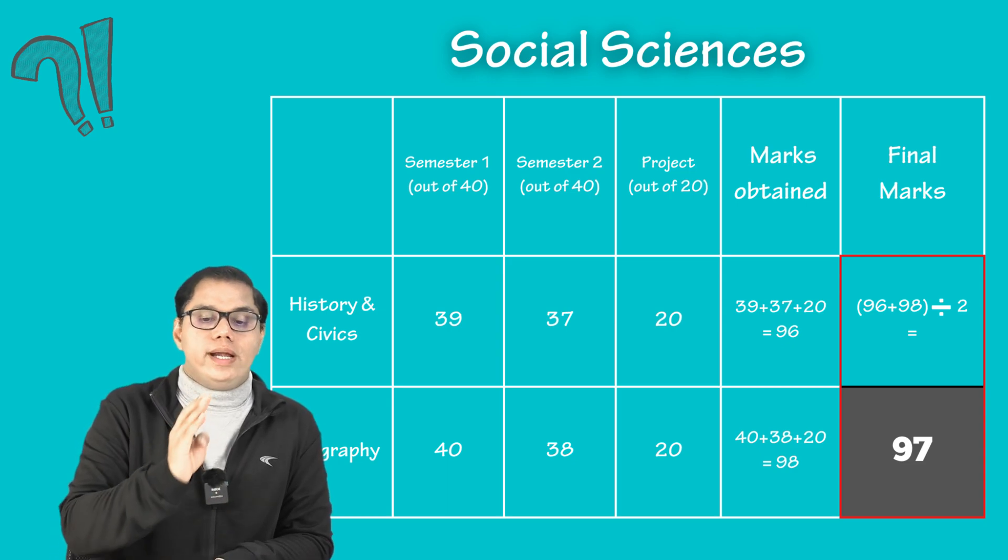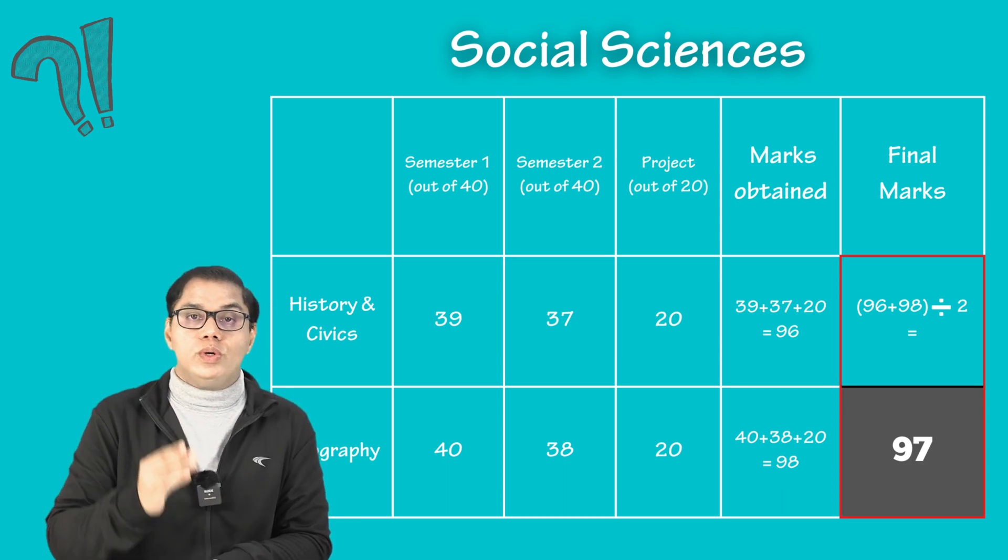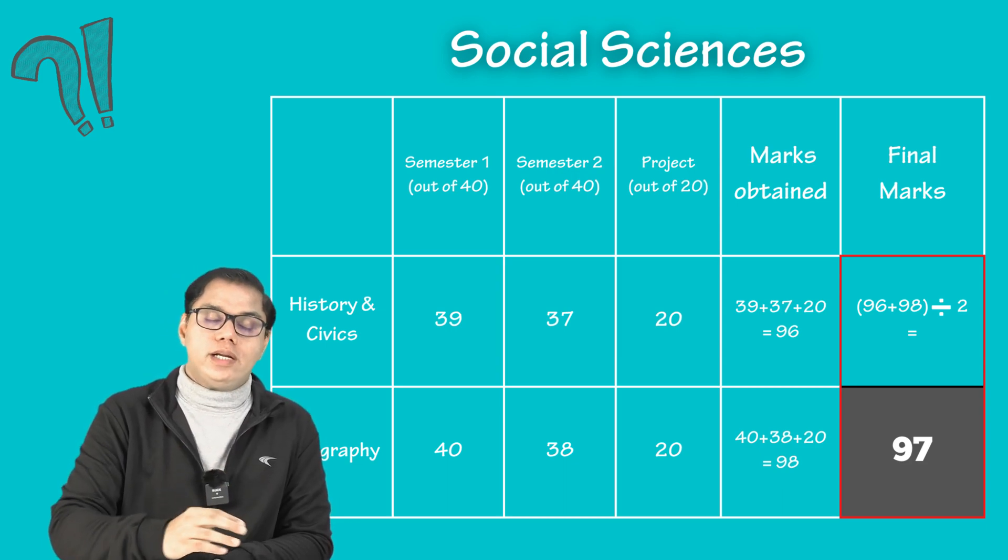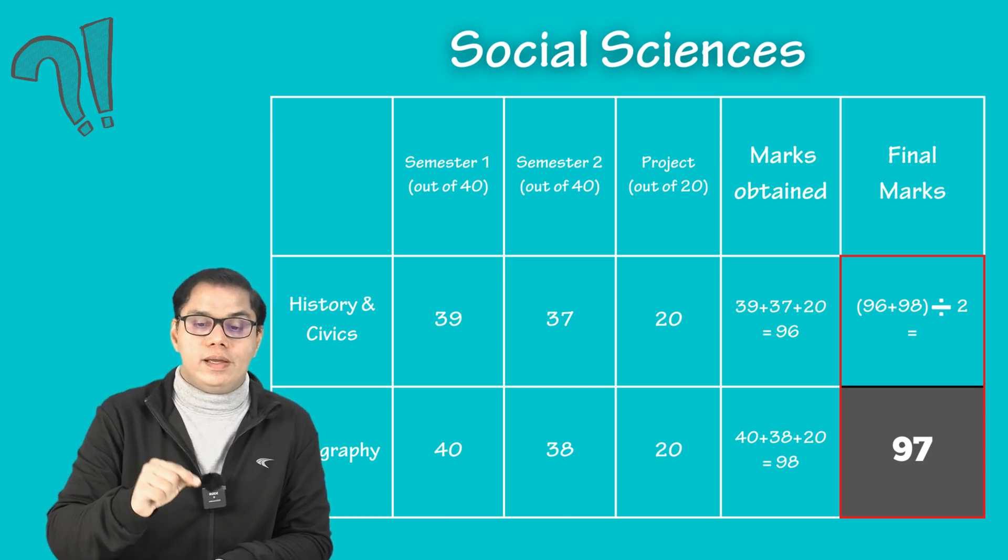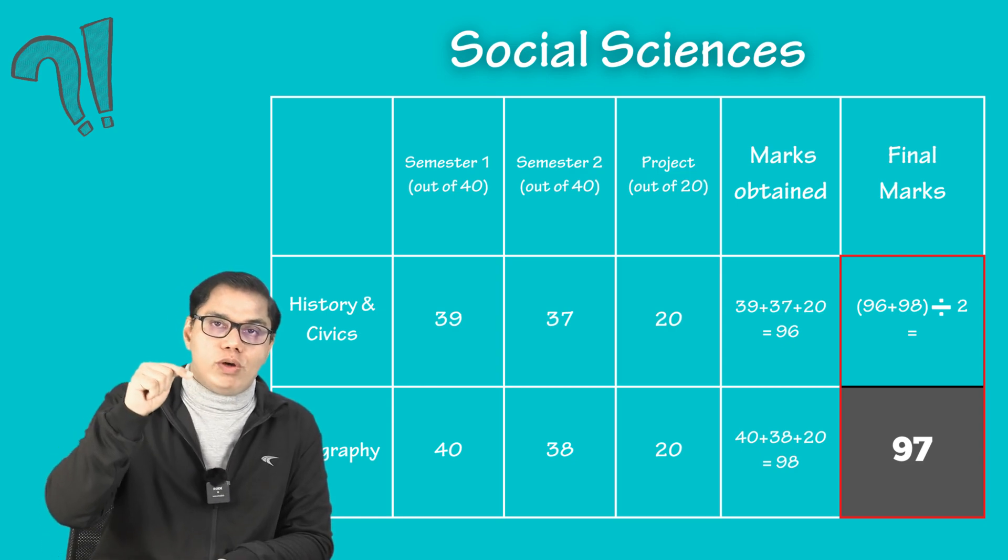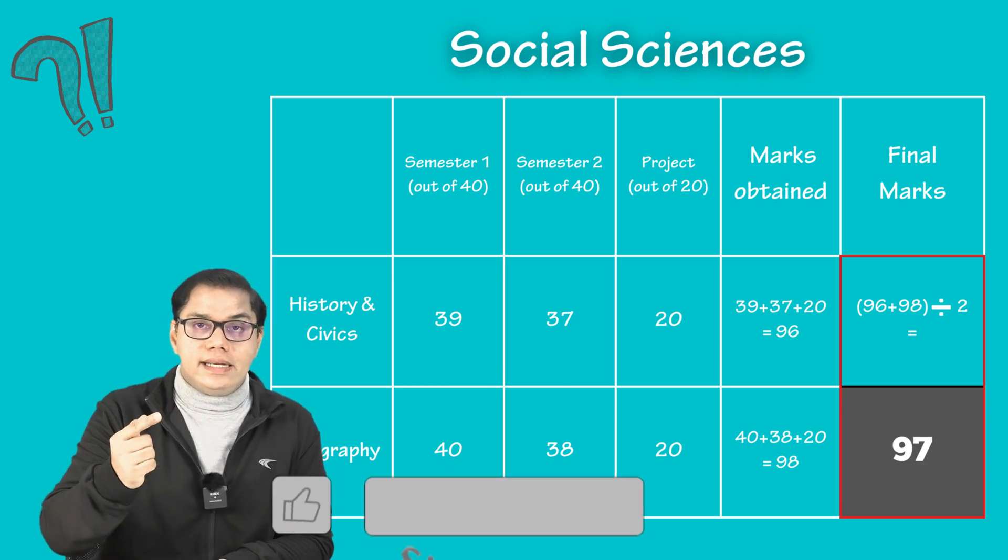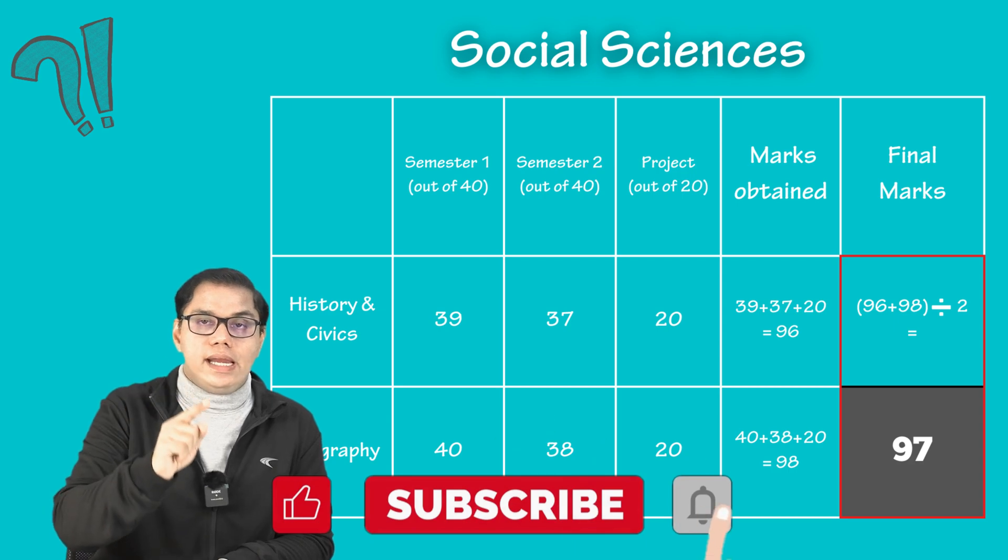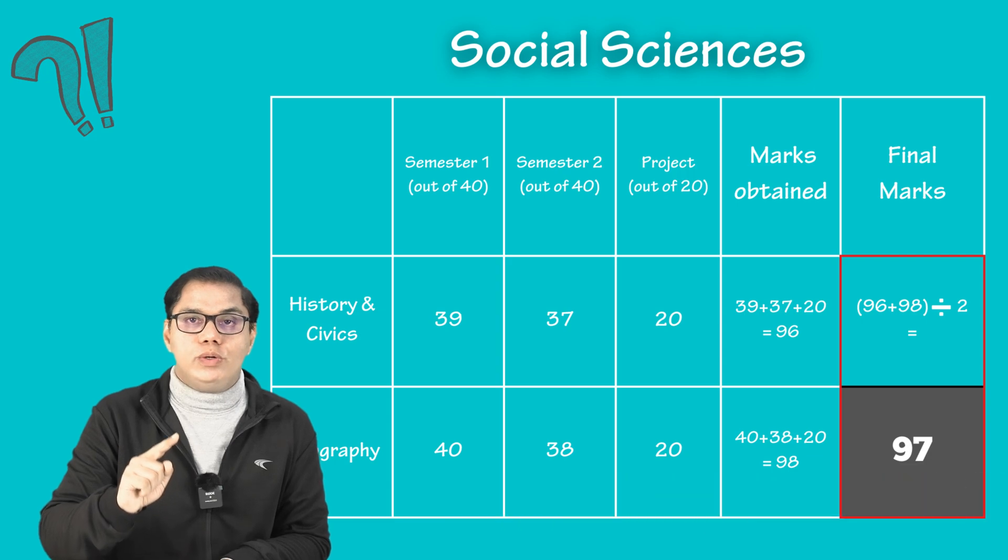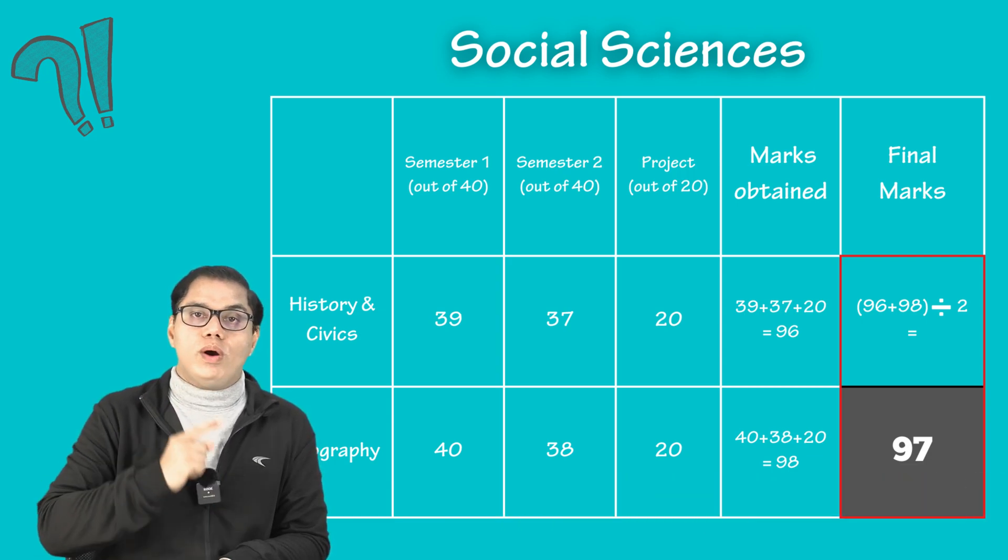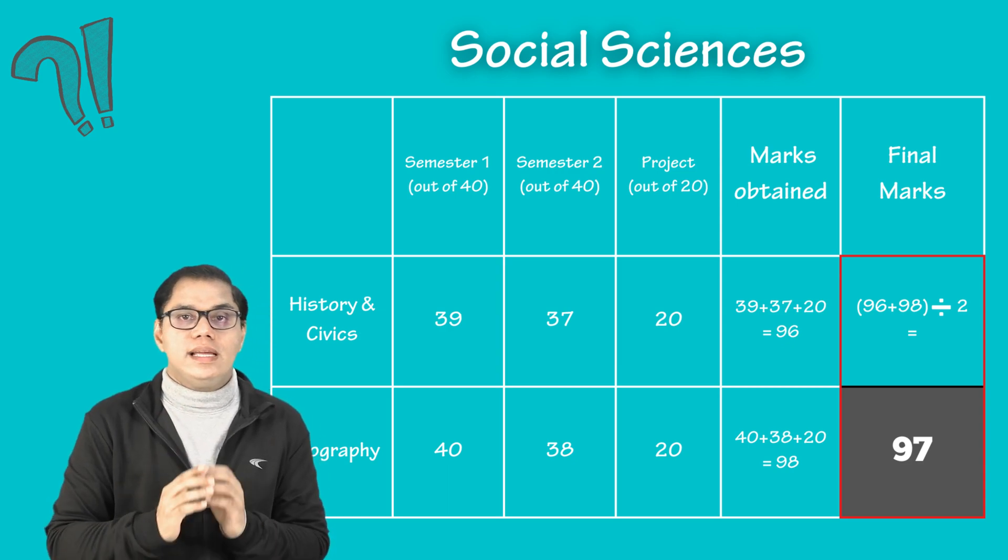As of now, in geography, a student has scored 40 on 40 in SEM 1. And in SEM 2, 38 out of 40. Project work, again 20 on 20. His total for geography is 98. So average of 98 final marks in geography and 96 final marks scored in history. So 96 plus 98 divided by 2. That means a student have scored 97 out of 100 in social sciences. Is it clear? If you have any doubt, please write your doubt in the comment box.